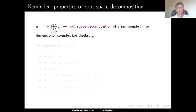Let G be a semi-simple finite-dimensional complex Lie algebra. Then, in the previous lecture, we saw that it has a root space decomposition, which means that it can be written as a direct sum of its Cartan subalgebra H, and then the direct sum of the root subspaces G_alpha, where alpha is a linear functional on H and belongs to the set of roots of the Lie algebra G.